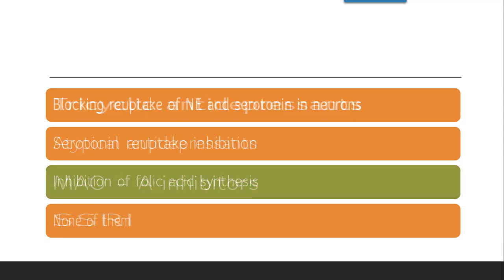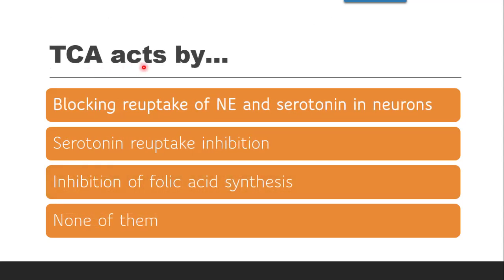Next question: Tricyclic antidepressants act by which mechanism — whether they block the reuptake of norepinephrine and serotonin in the neuron, whether they are responsible for only serotonin reuptake inhibition, whether they are responsible for inhibition of folic acid, or none of them? The correct answer is they block the reuptake of norepinephrine and serotonin in the neuron at therapeutic doses.